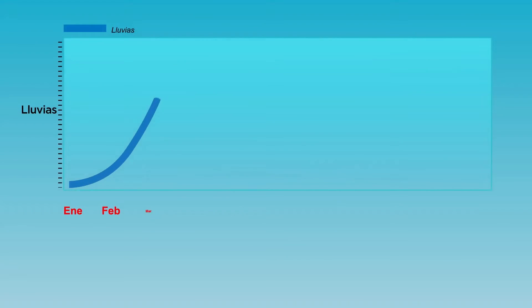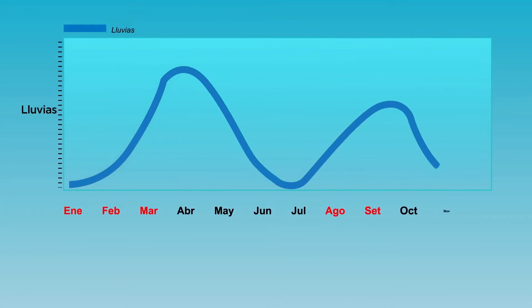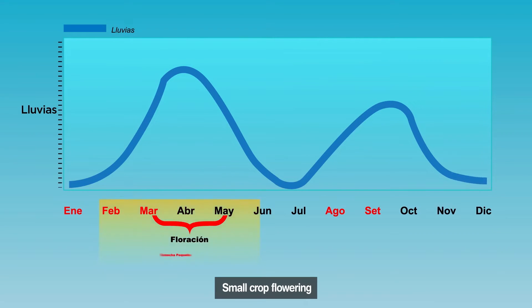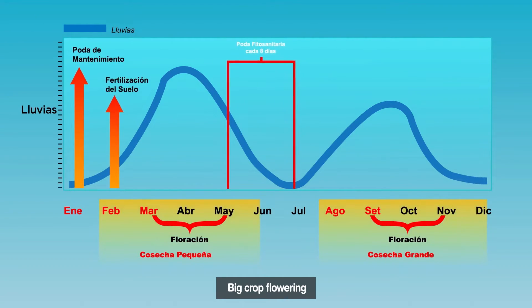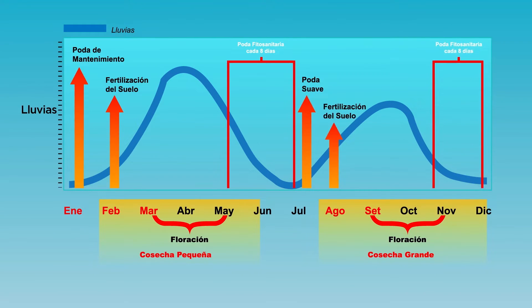What happens in places where there are two rain peaks and two production peaks in the year? In these places, there will therefore be two noticeable blooms. All the same prevention and control tasks mentioned above must be carried out for each flowering peak, that is, twice a year.